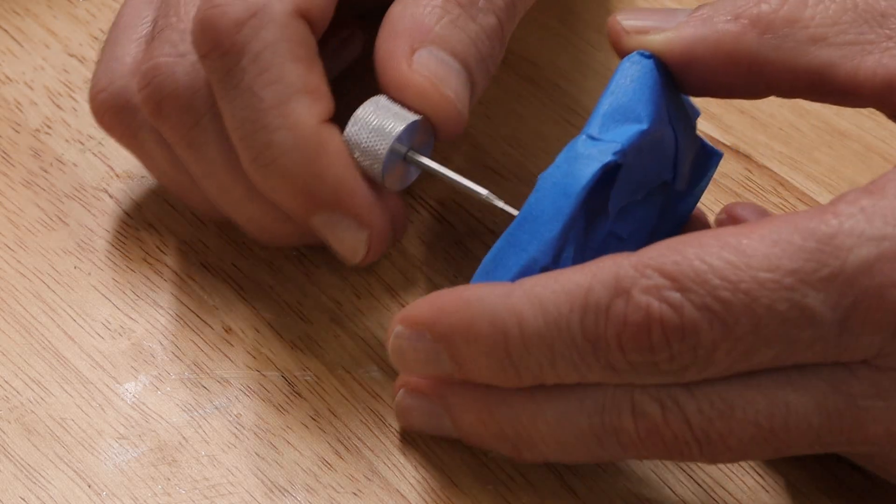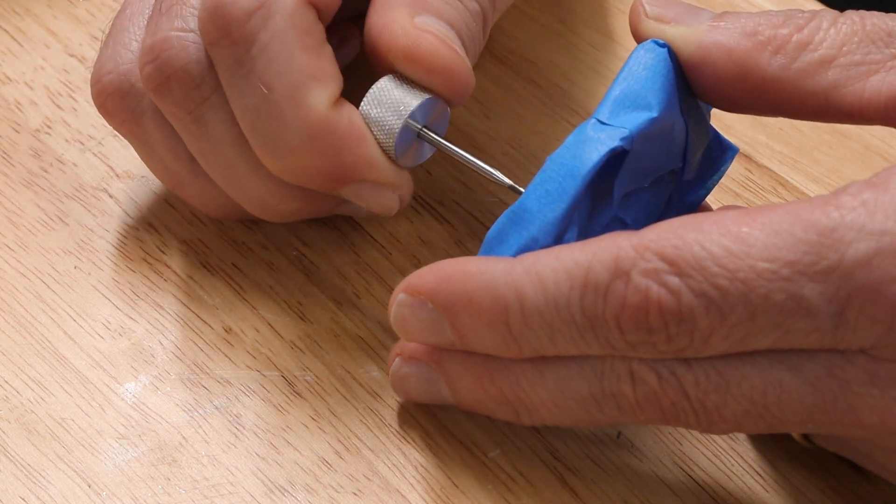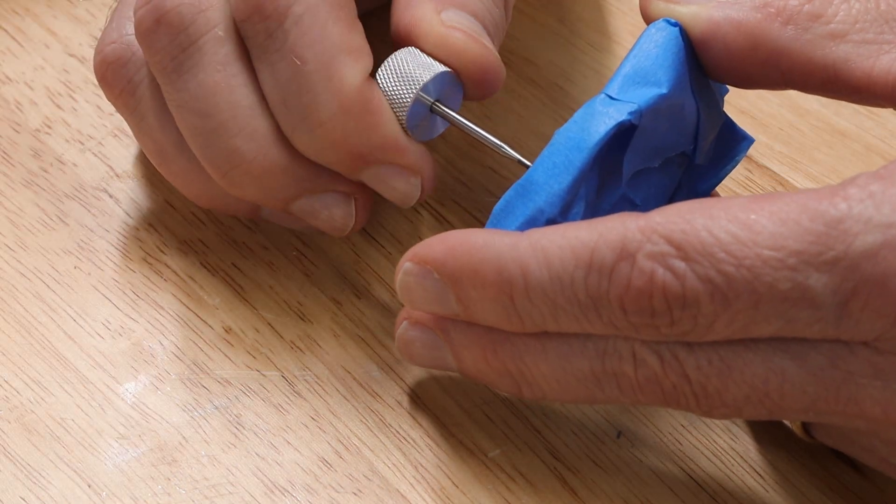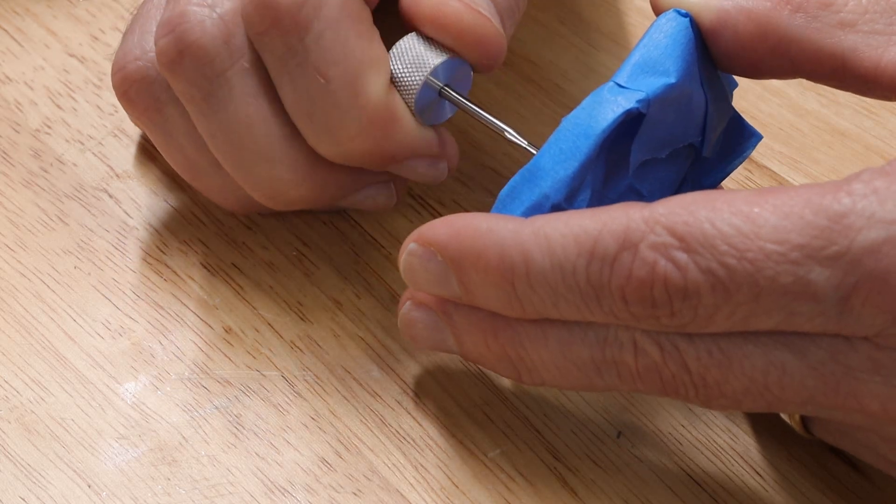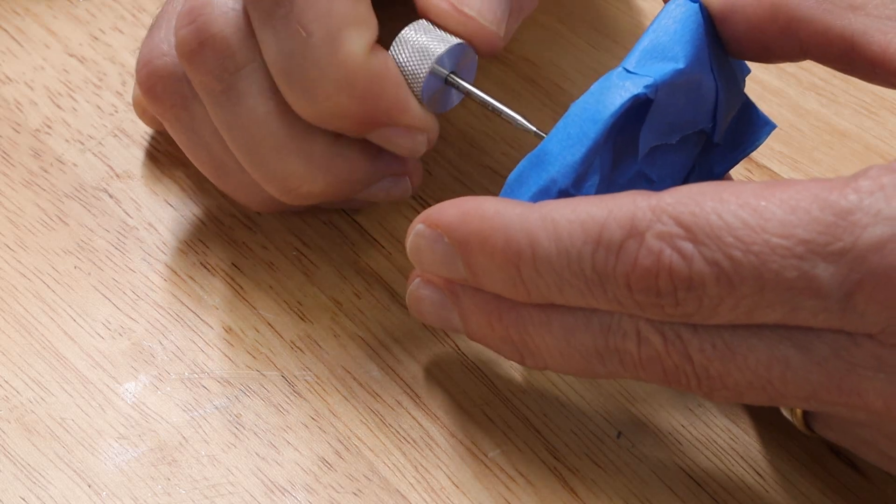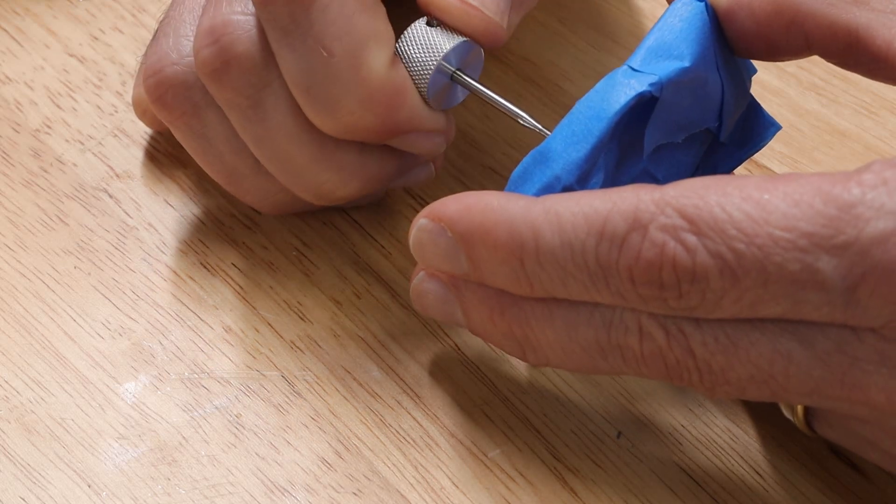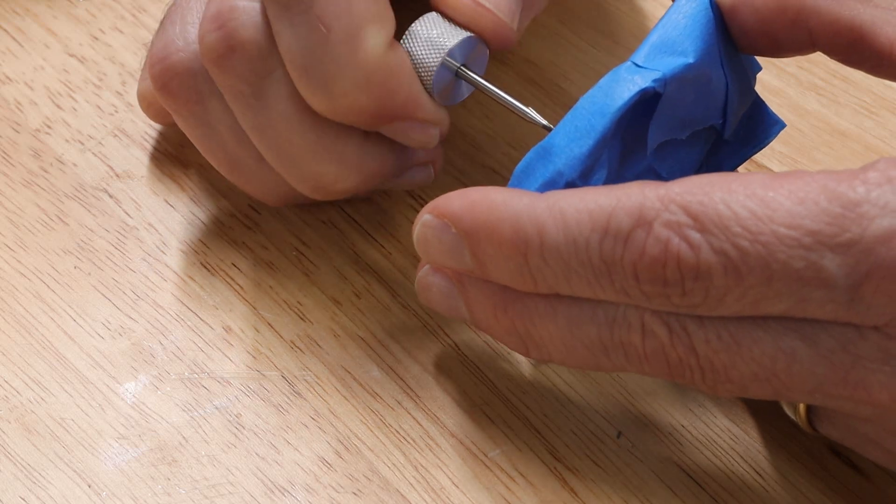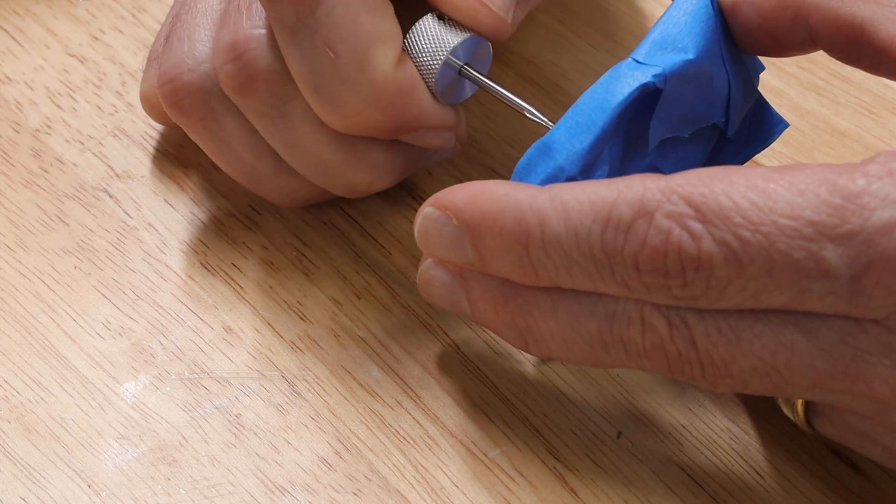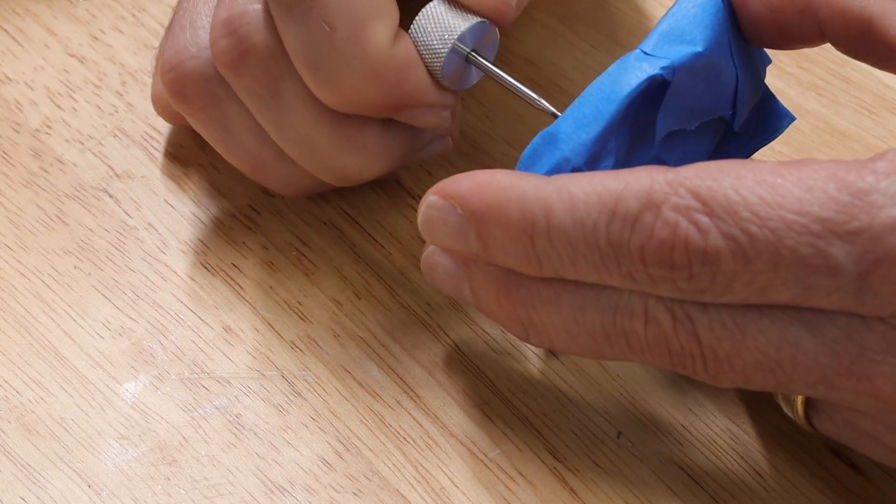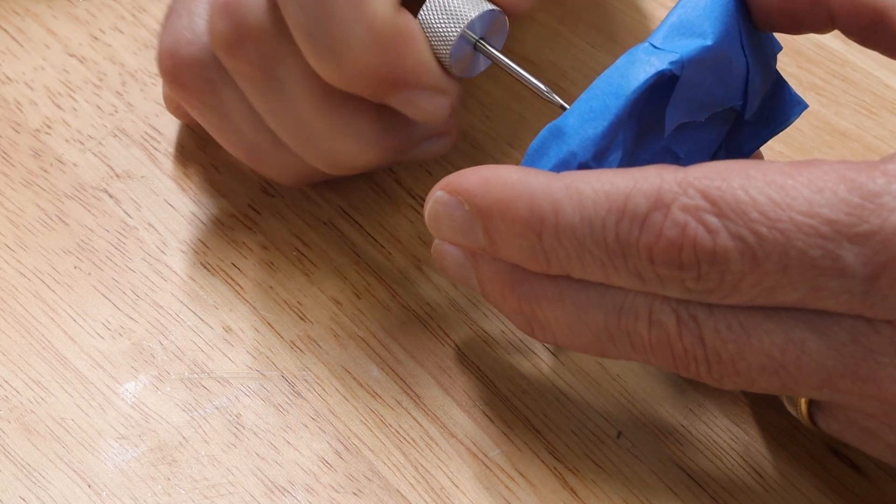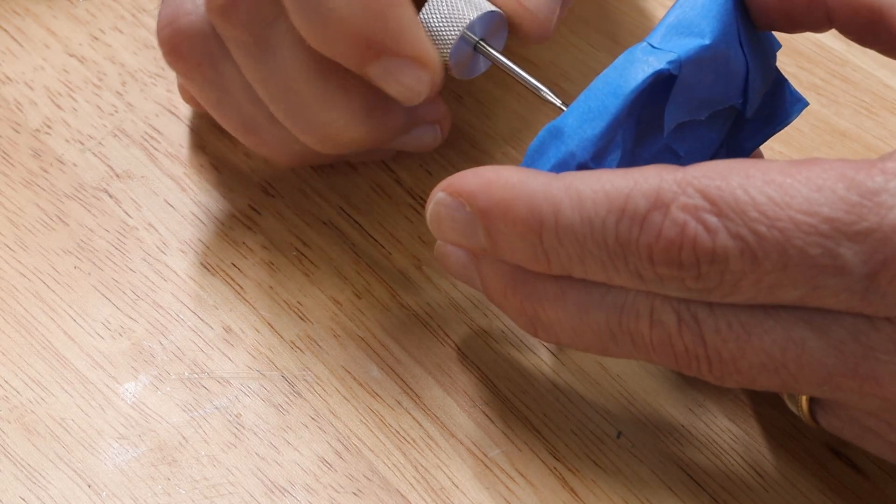So now I'm going to switch to this approach here, because it gives me better control. And I can feel really well with this tapping handle. And what I'm doing is I'm basically tapping as long as the feel is about the same. As soon as it starts to get a little stiffer, then I'm going to back the tap out and then blast out the hole with some air. And then put the tap back in and tap the last few threads, or maybe the last thread, I'm not sure.